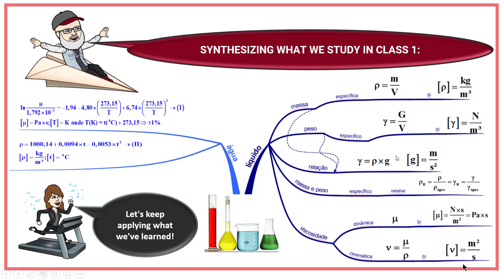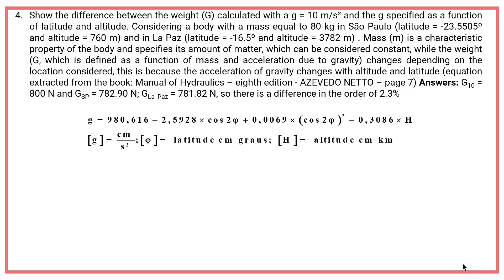Let's keep applying what we've learned. The weight G calculated with a G equals 10 meters per square second and the G specified as a function of latitude and altitude.